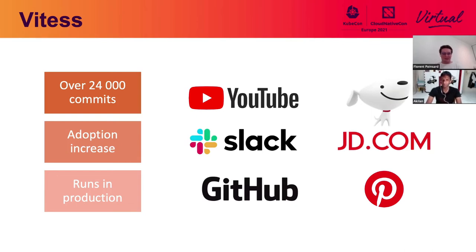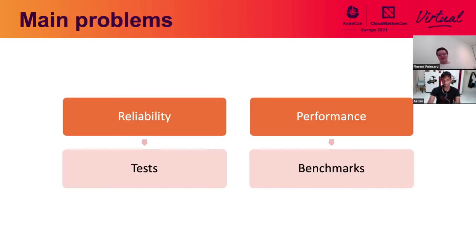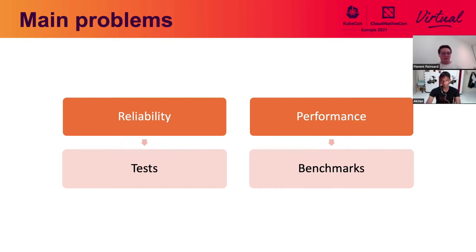Florent takes over to discuss the talk further. As Vitesse is being used in bigger and bigger systems, this comes down to two problems: we need to ensure the Vitesse codebase is both reliable and has good performance. For reliability, we have unit tests, end-to-end tests, and CI/CD pipelines. For performance, we have benchmarks, and today we'll cover how to benchmark a large project like Vitesse.